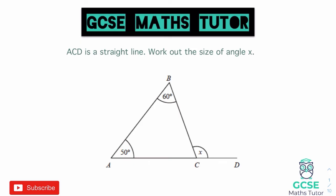Looking at this first question, the question says that ACD is a straight line. If we find that line A to C to D, it forms a straight line down the bottom. Now that's going to be important on a question like this where there's more than just the triangle, because any angles together on that straight line are going to form 180 degrees. One of the angles in the triangle also forms along with angle X, and those two angles are going to add up to 180.